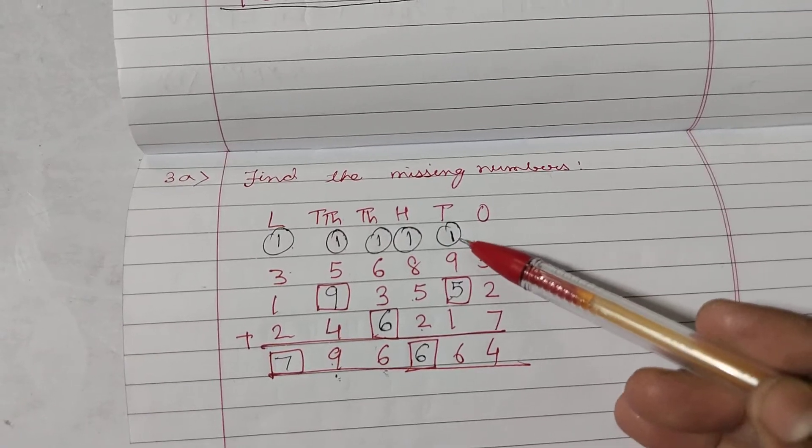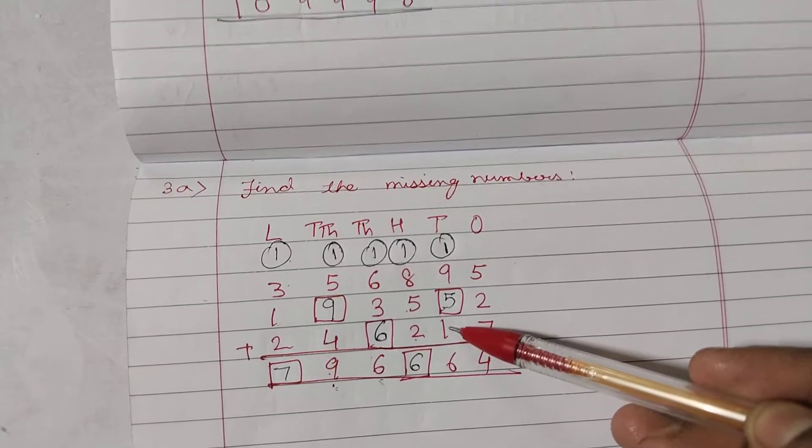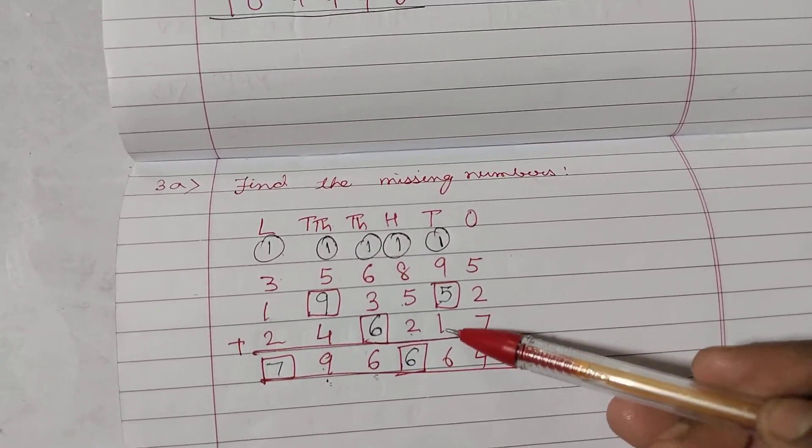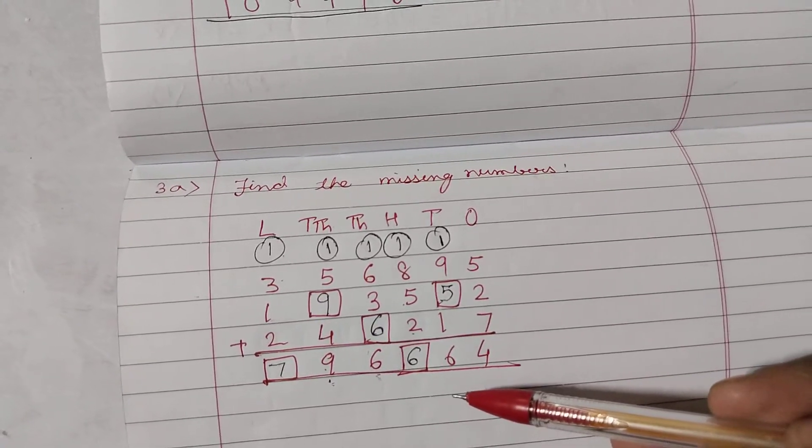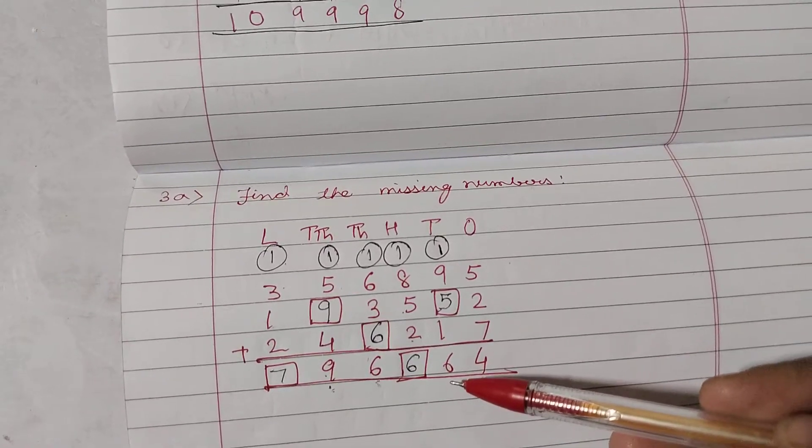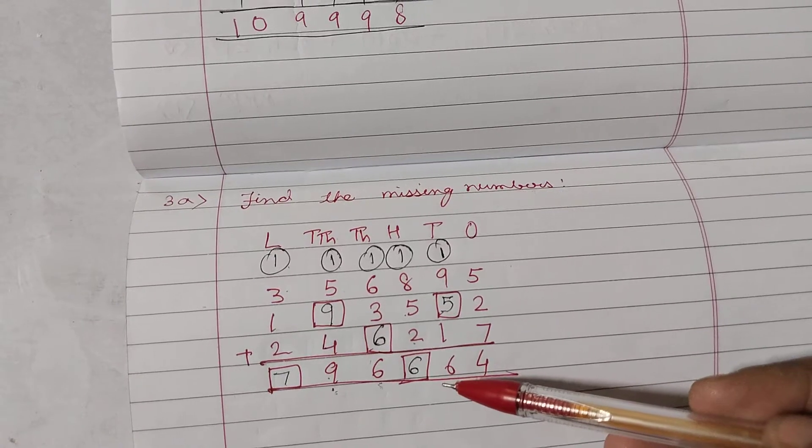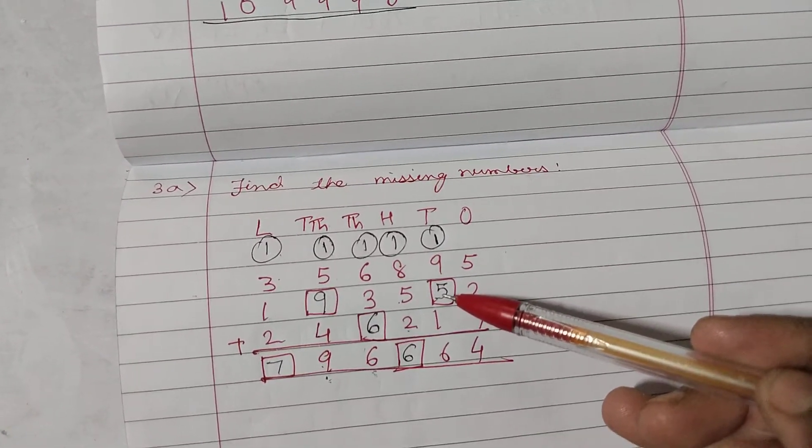Now, children, when you add this 1, 9 and this 1, so we are getting here 9 plus 1, 10. 10 plus 1, 11. But we need to get 16. But we are doing addition, no? So, we can't get 6. So, we have to get 16. So, what shall we add in 11 to get 16? 5. Write here 5.